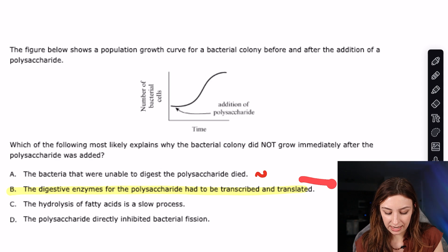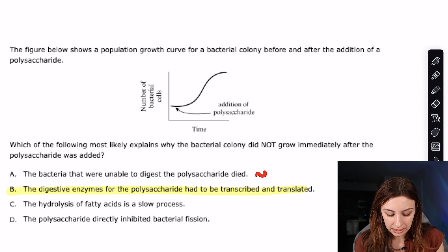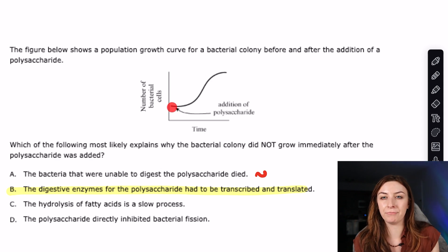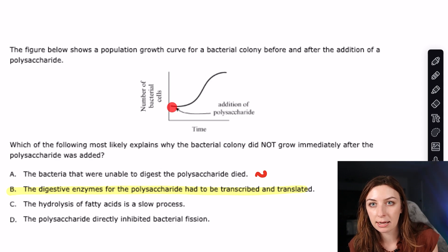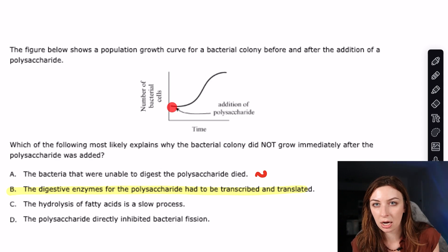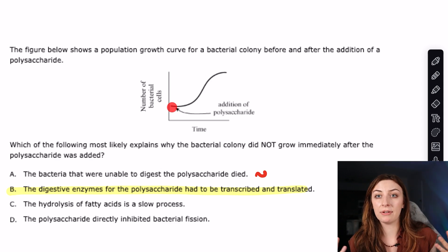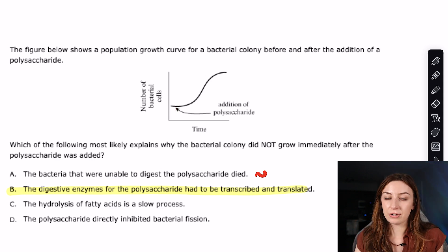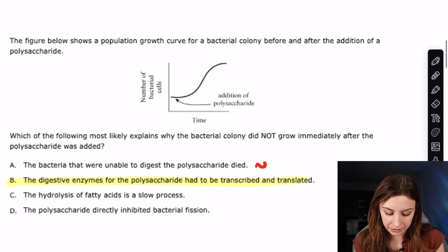Answer C says the hydrolysis of fatty acids is a slow process — fatty acids and polysaccharides are two totally different things, so that's irrelevant. Answer D says the polysaccharide directly inhibited bacterial fission — that would mean the colony just declines and never grows. If you're not fissioning, you'll never increase colony size. So B is the correct answer.